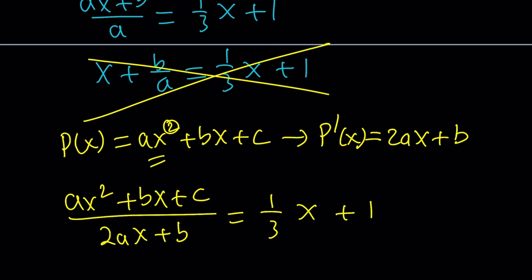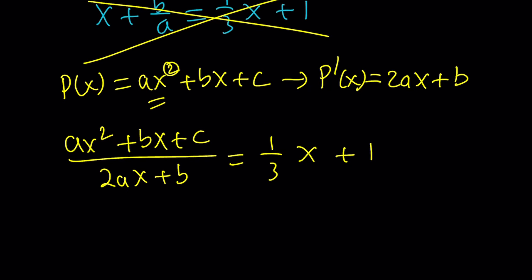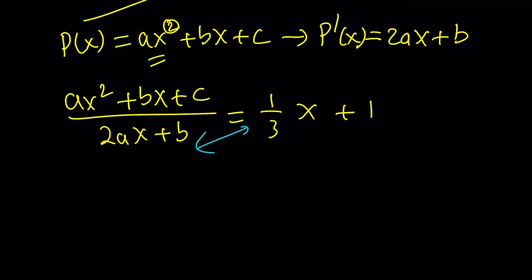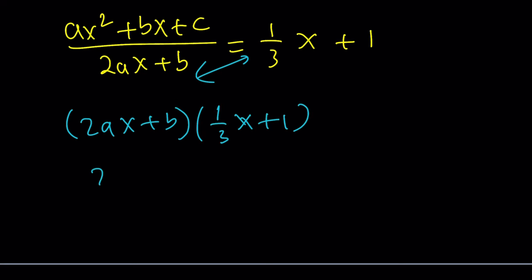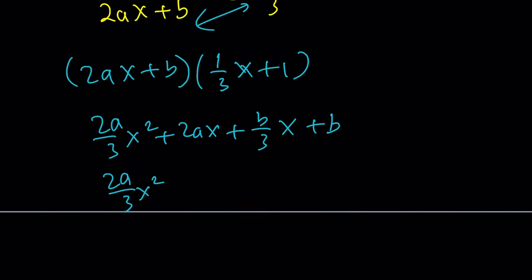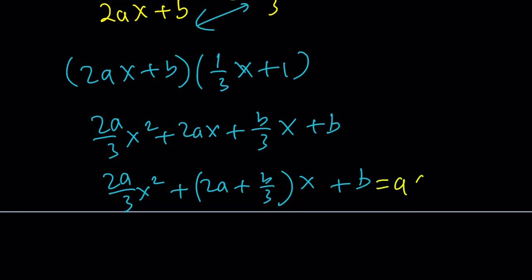Note that 1 over 3 should be a clue, but we'll get to that later. To find what A, B, C are, we need to do cross multiplication. Setting the cross product equal to AX squared plus BX plus C: distributing 2AX plus B over 1 over 3X plus 1 gives 2A over 3 X squared, plus 2AX, plus B over 3 X, plus B. Combining like terms, 2A plus B over 3 is the coefficient of X and B is the constant.